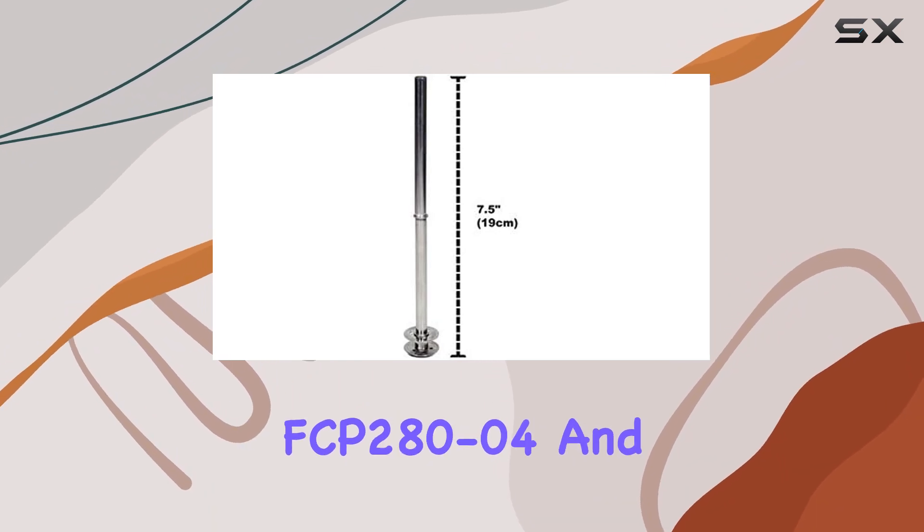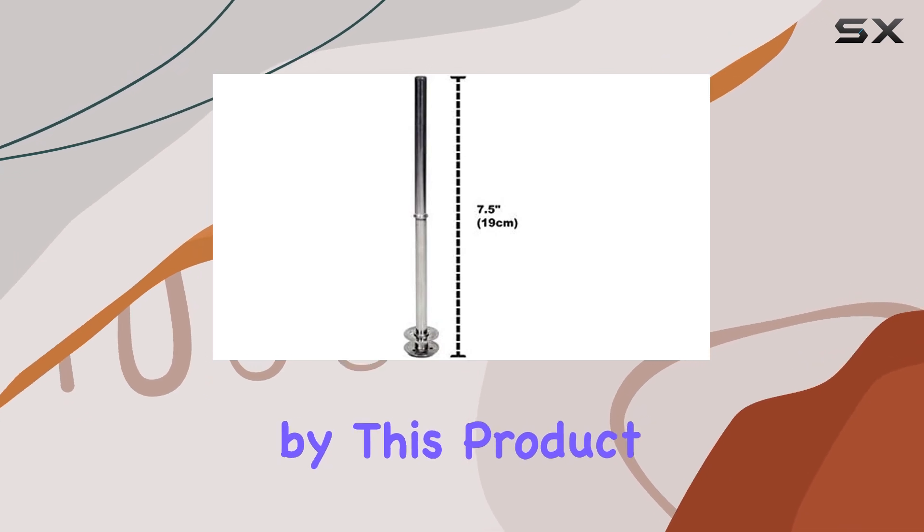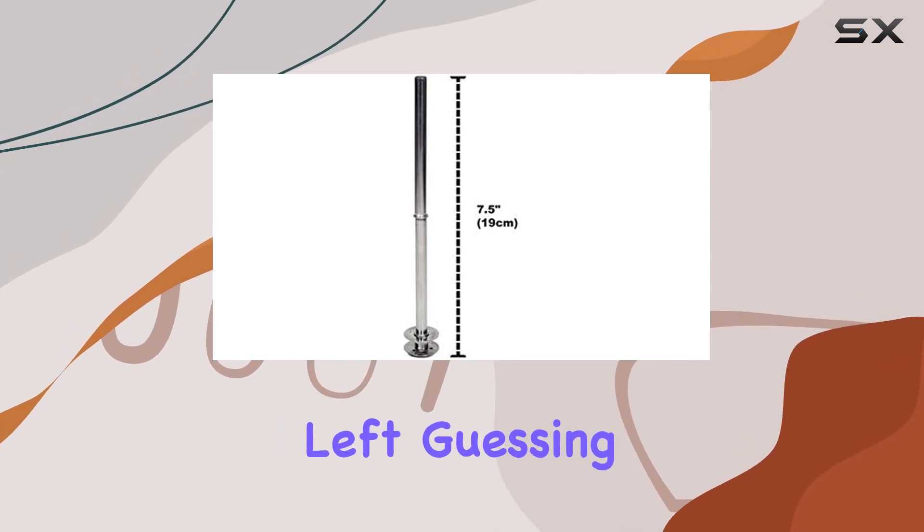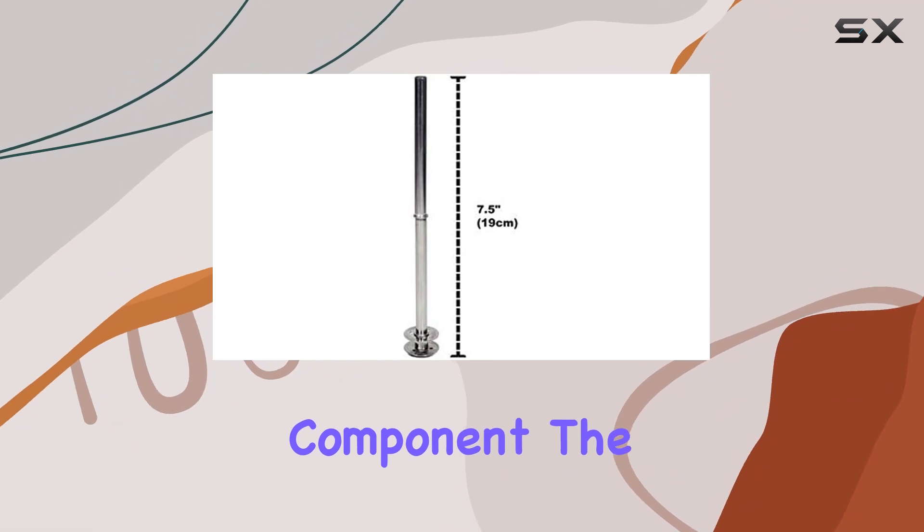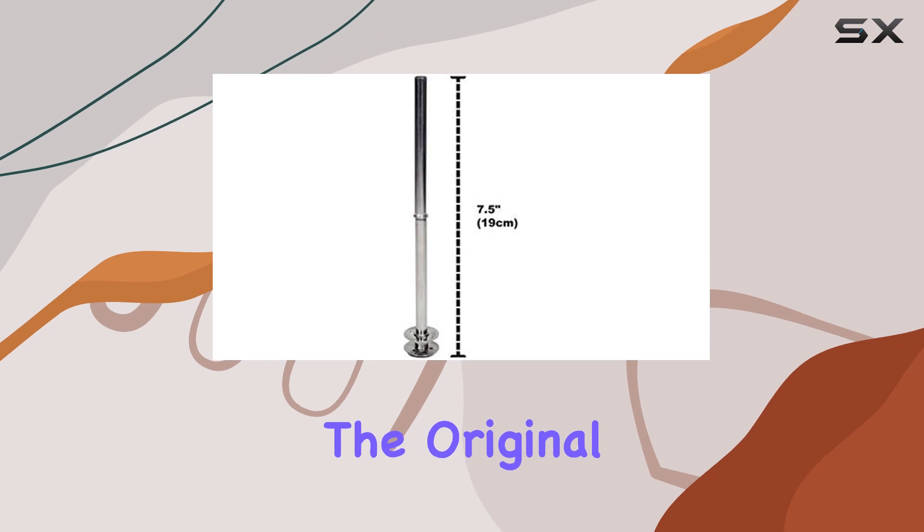The pump tube measures 7.5 inches in total length, a specification that matches the original Farberware parts. This precise fit is essential for the effective functioning of the percolator, as it ensures that the water cycles through the coffee grounds correctly.